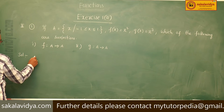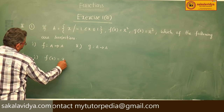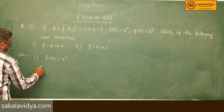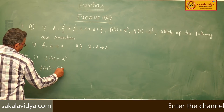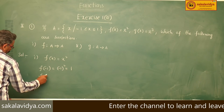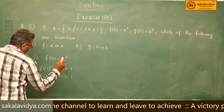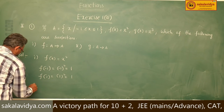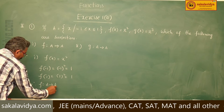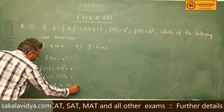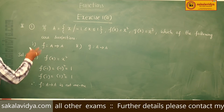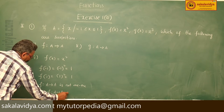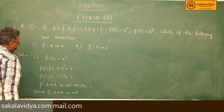For the first case, f(x) = x². We find f(-1) = (-1)² = 1 and f(1) = 1² = 1. Different elements have the same image, so f is not one-to-one. Therefore, f: A → A is not one-to-one, which means it is not a surjection.